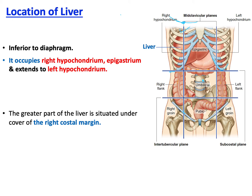Now let us start with the liver. This is the shadow of the liver covered by the thoracic cage. The diaphragm, which I'll draw in here, is superior to the liver. So the liver is located inferior to the diaphragm.